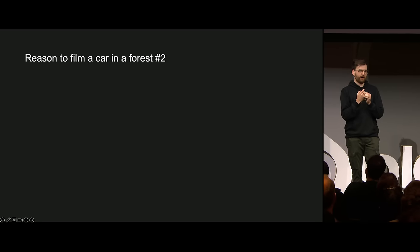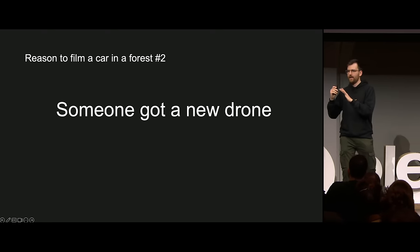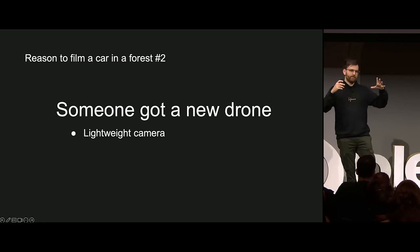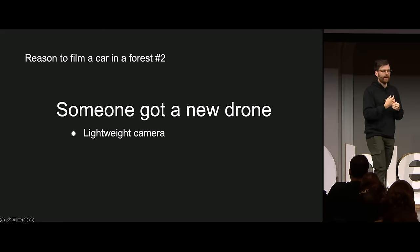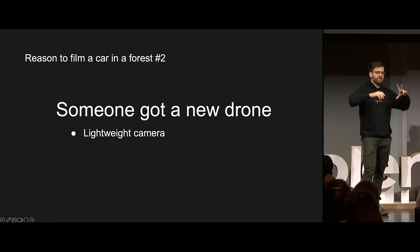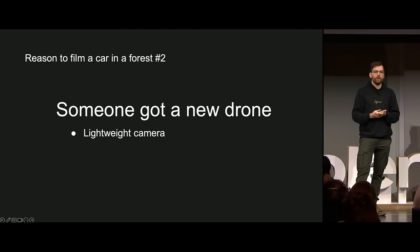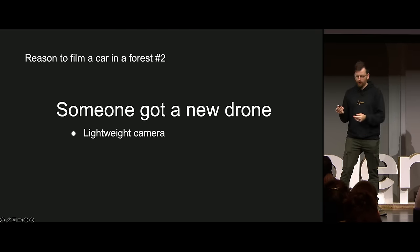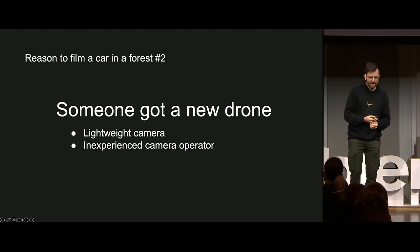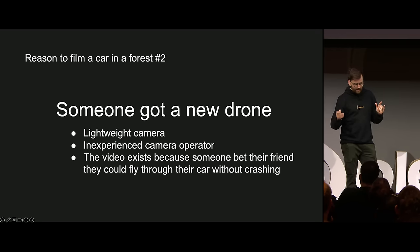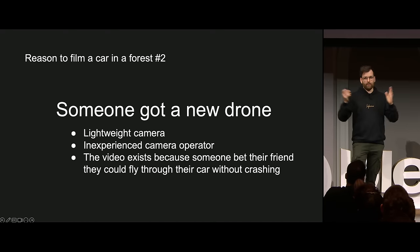So we have to come up with another reason to film a car in the forest. How about someone got a new drone? We've got a lightweight camera to attach to the drone, and this camera is going to be significantly cheaper - so we can have lower dynamic range, barrel distortion, lens distortion, and chromatic aberration. We can even add more sharpening and a lot of noise. Since it's a new drone, we'll probably have an inexperienced camera operator. We're going to make a video that exists because someone bet their friend they could fly through their car without crashing.